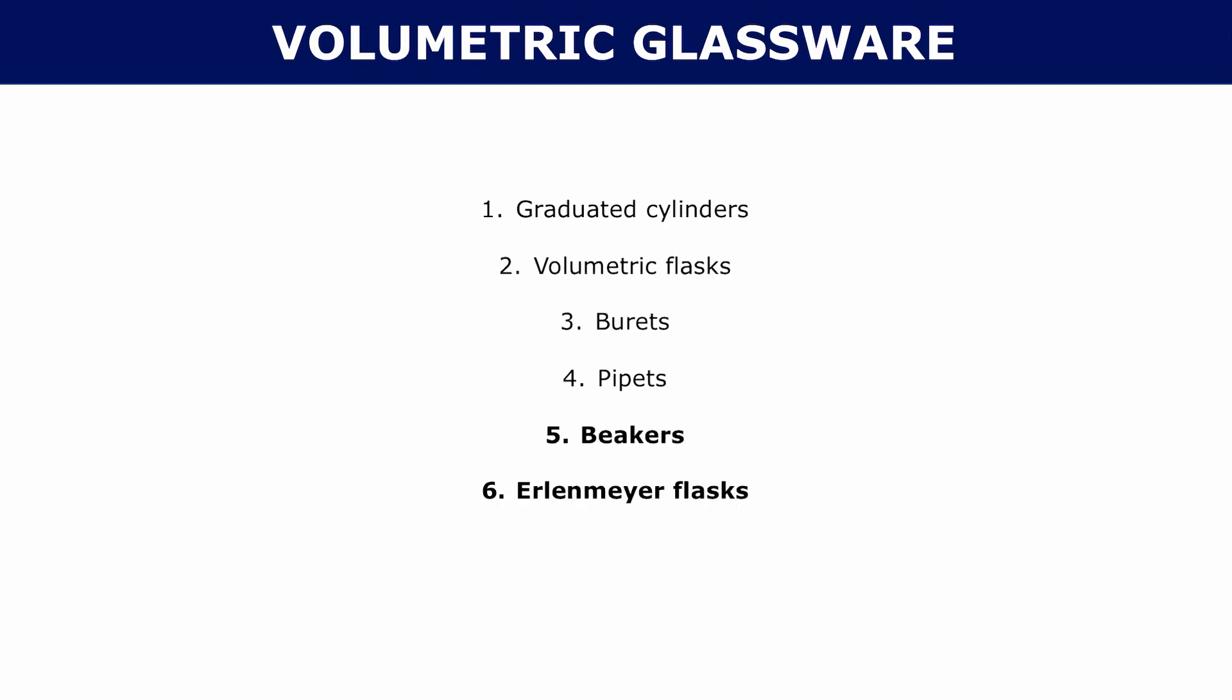You have four types of volumetric glassware here. There's a lot more, but these are four main ones. So you have graduated cylinders, volumetric flasks, burets, and pipettes. 5 and 6 are not volumetric glassware. The only reason 5 and 6 are here is because I want to show why they're not considered volumetric glassware. Let's look at 1, 2, 3, and 4 first.